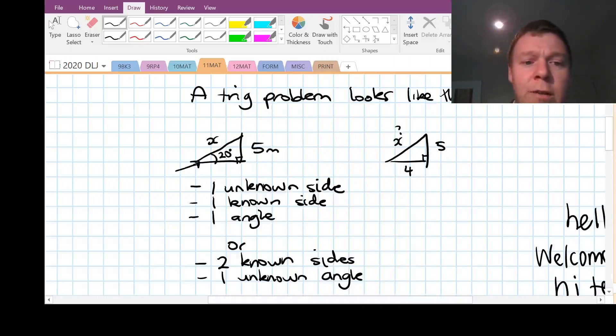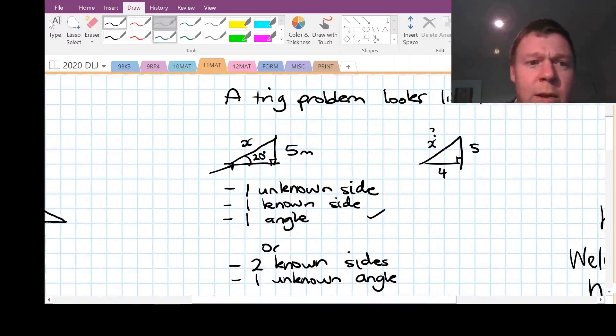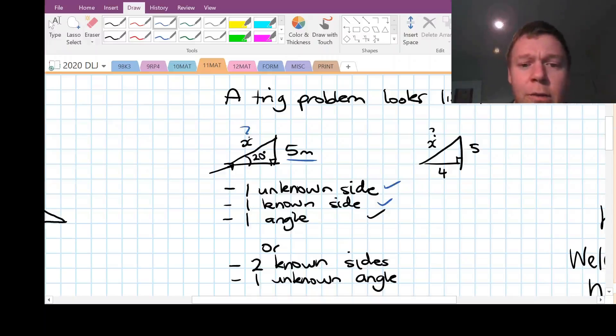So that's our angle there, 20 degrees. We've got our known side, which is 5 meters, and we've got our unknown x side. So every trig problem has these three things.